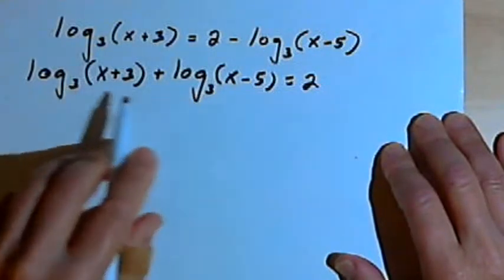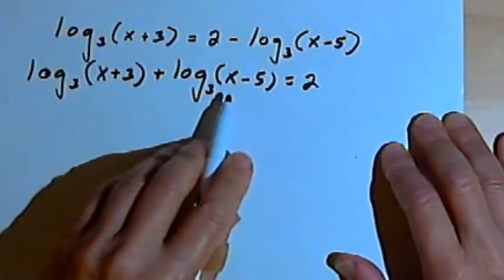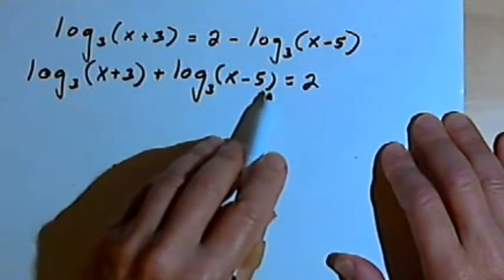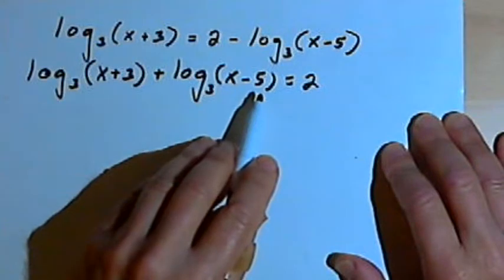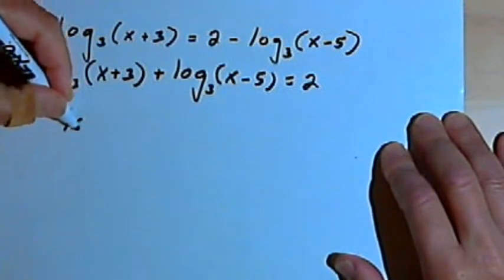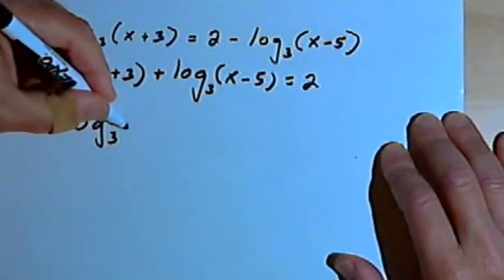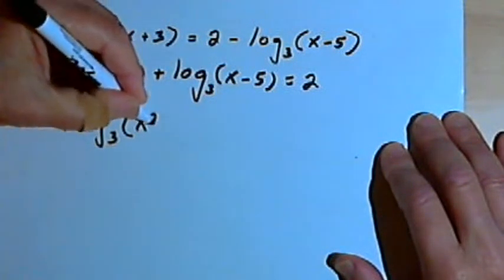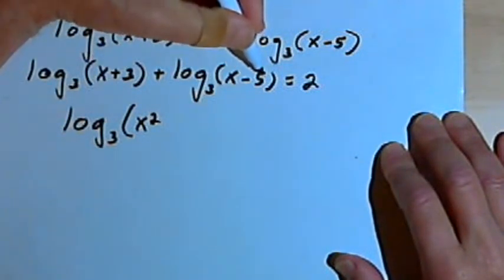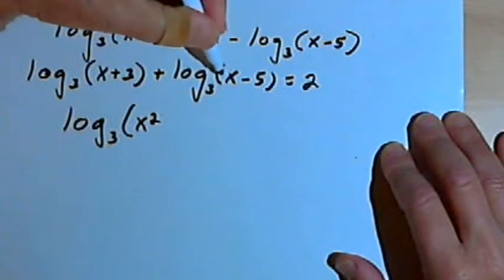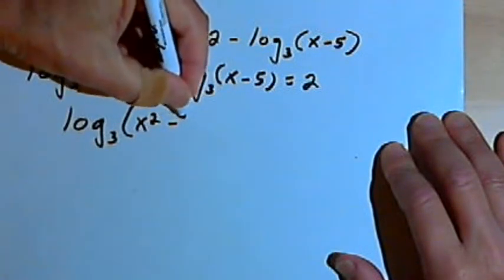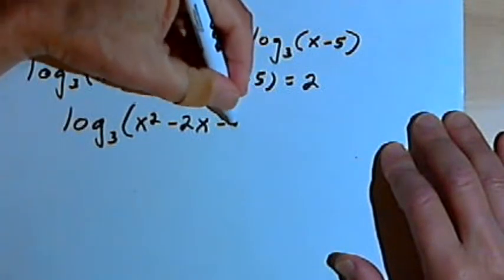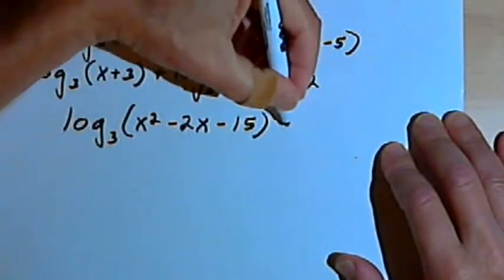I've got two logs on the left side of the equation. I'm adding them together and they have the same base. So that means I can just multiply this x plus 3 times x minus 5 and convert that all into one logarithm. So that's going to be the log base 3 of, let's see, x times x is x squared. Then I've got an x times negative 5, so it's a negative 5x and a positive 3x. So that's minus 2x and 3 times negative 5 is negative 15. And that equals 2.